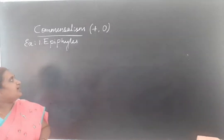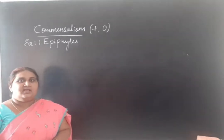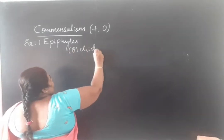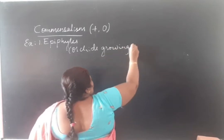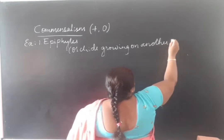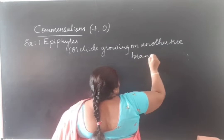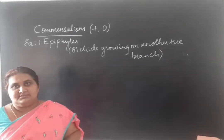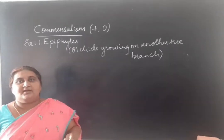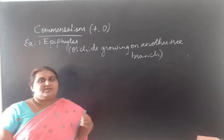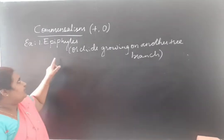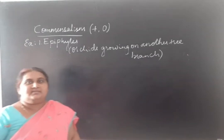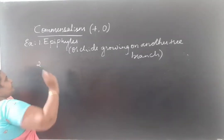Epiphytes — plants that grow on other plants. For example, orchids growing on another tree branch. They grow on another tree branch only for the space. Orchids have their own hygroscopic roots, by which they can absorb moisture from the surrounding environment. So epiphytes is an example — the orchids are benefited by the other plant, while the other plant remains neutral.